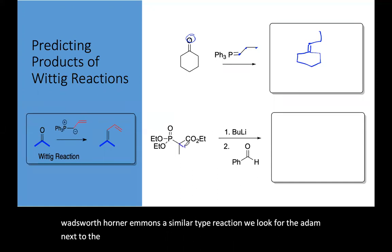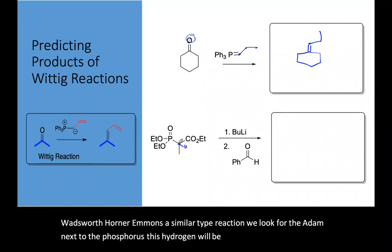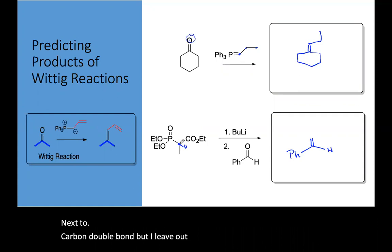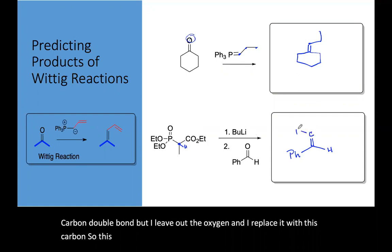This hydrogen will be acidic and this will be my nucleophilic carbon. So we can go over and draw the electrophile. That's the phenyl next to the carbon double bond but I leave out the oxygen and I replace it with this carbon. So this carbon and the methyl group and the CO2 ethyl.